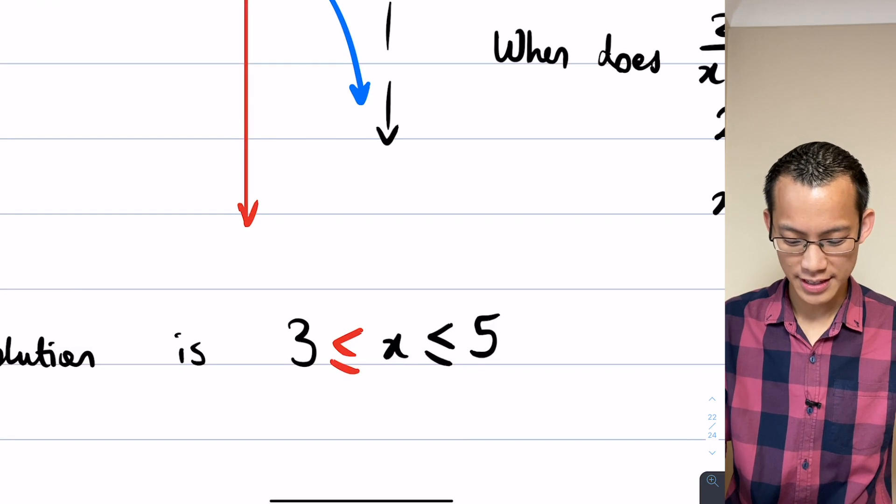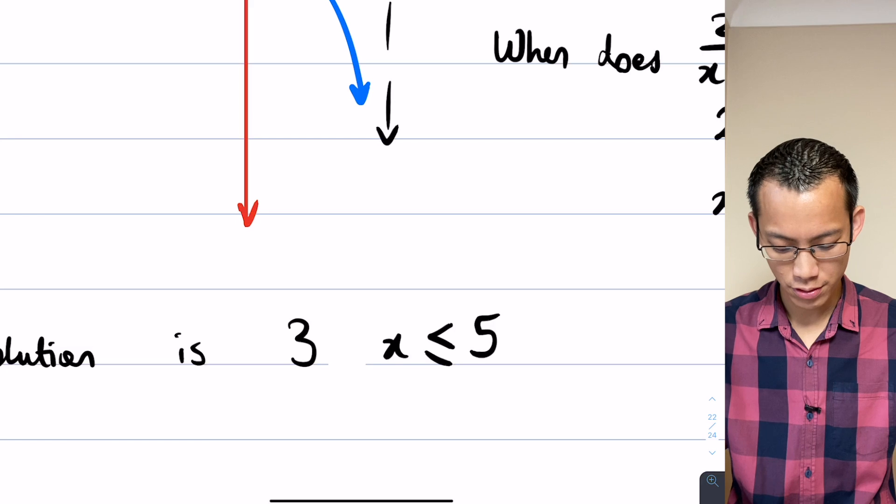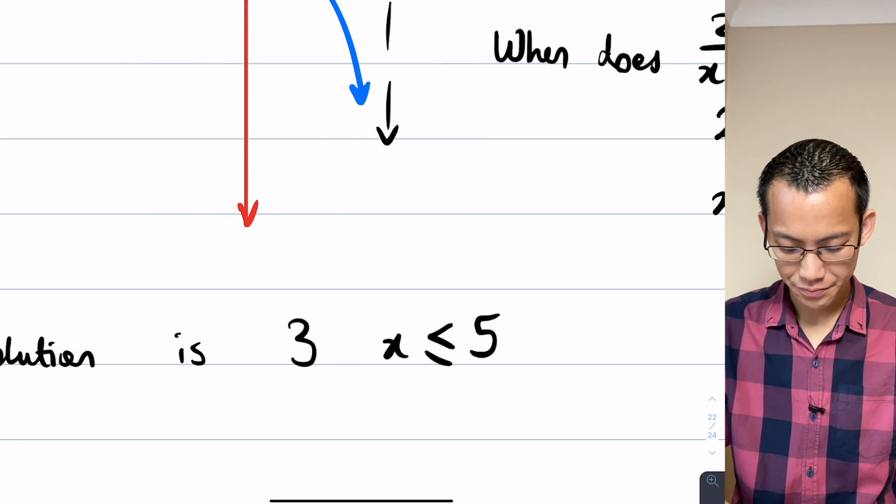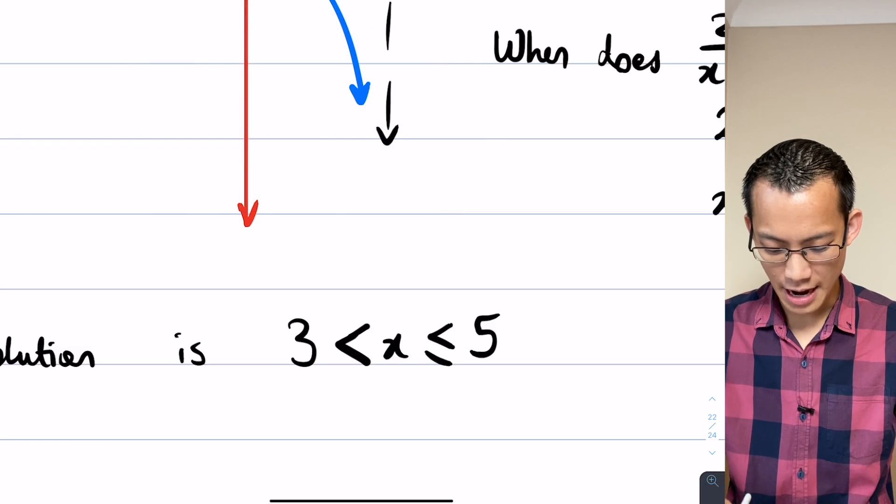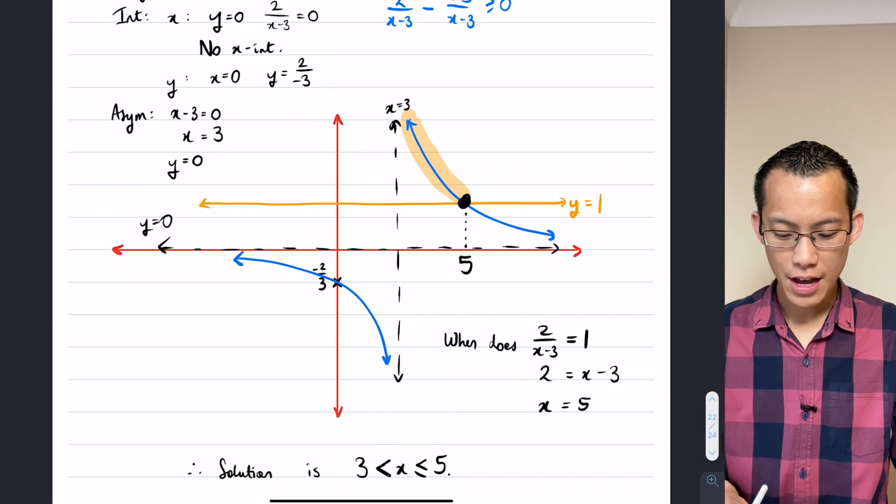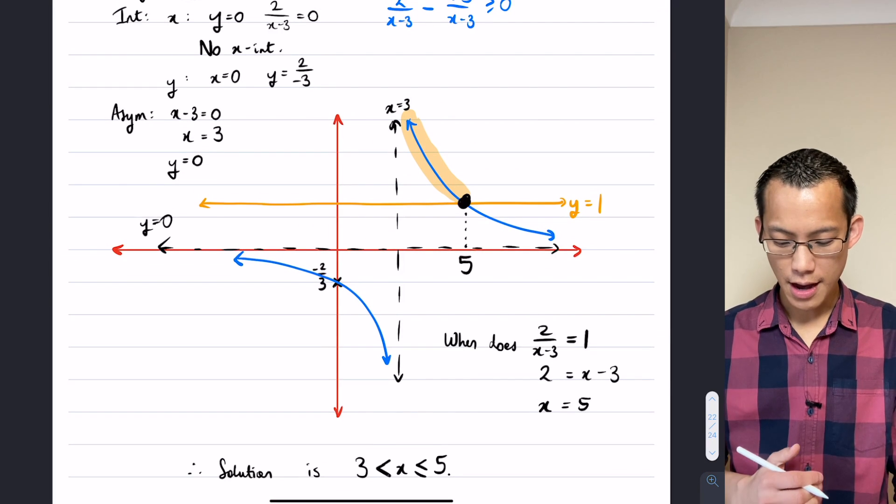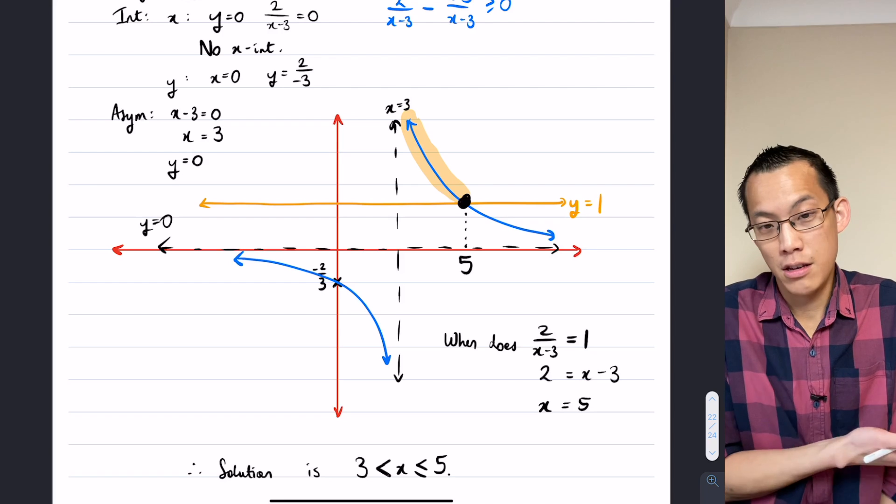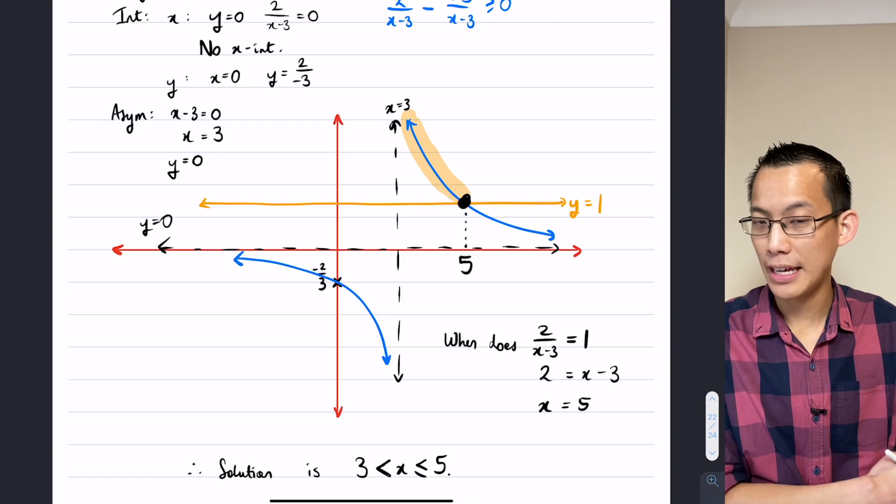So therefore, down here in my solution, instead of less than or equal to, I'm just going to write less than. And I know that's a bit weird, that's a bit sneaky and unusual, but that's kind of why you can see the graph tells you this. It shows you there's an asymptote there. You're not allowed to go there, so don't include it in your solution.